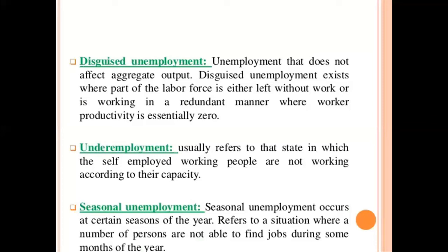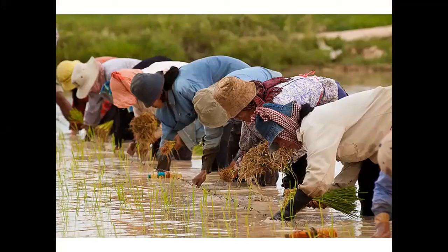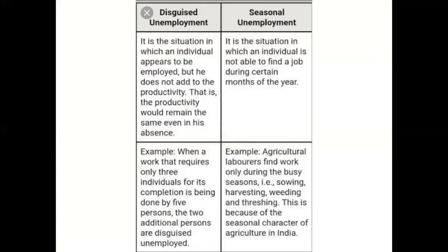So to summarize: underemployment is about people not working according to their full potentiality; in disguised unemployment, the labor force is more than needed and productivity of the extra workers is zero; and seasonal unemployment means people are unemployed according to the season. In disguised unemployment, an individual appears to be employed but is not adding to productivity — when productivity is not added, the country's GDP does not increase, so that person is considered unemployed in economics.